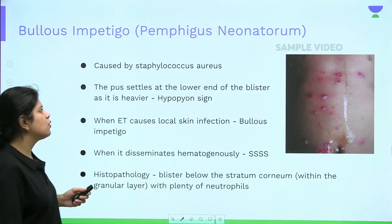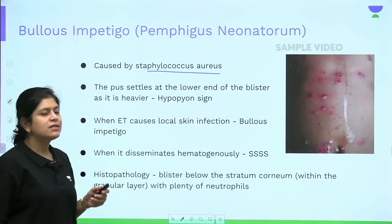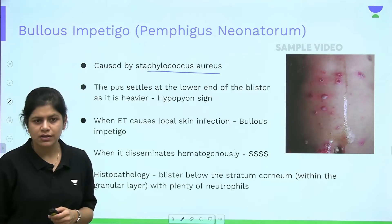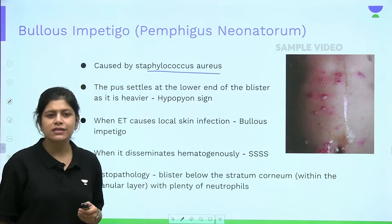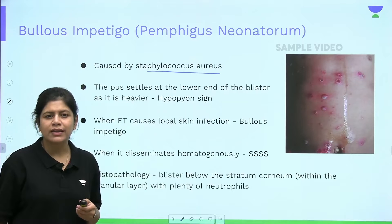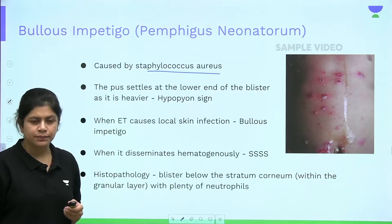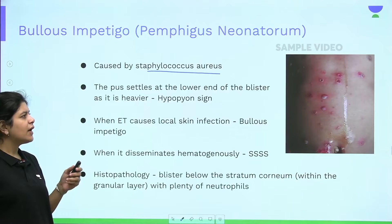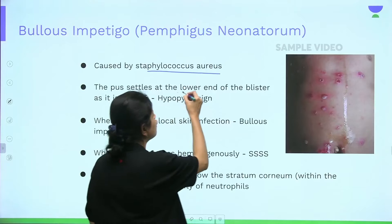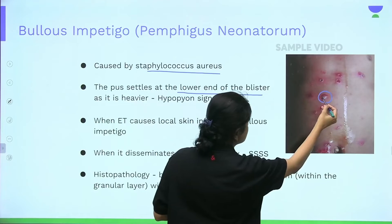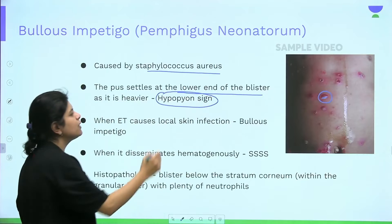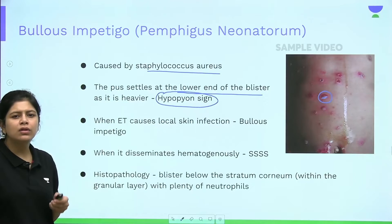Bullous impetigo is caused by Staphylococcus aureus, which releases a toxin called the epidermolytic toxin. This toxin cleaves desmoglein 1, present in the desmosome at the subcorneal level, causing blister formation. Pus collects within the blister and settles at the lower end — this is called the hypopyon sign, classically seen in bullous impetigo.